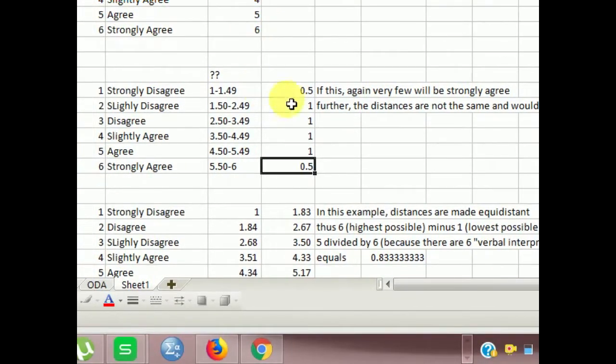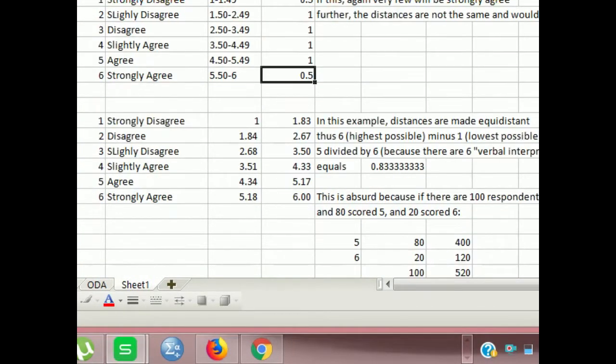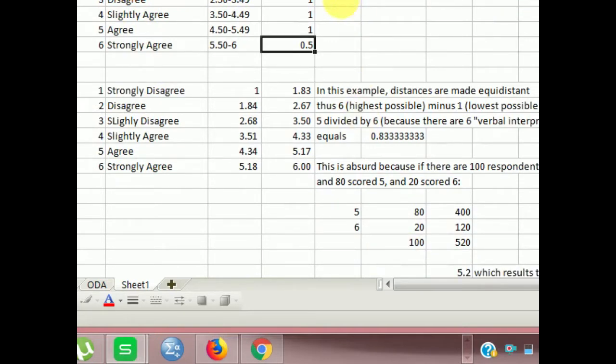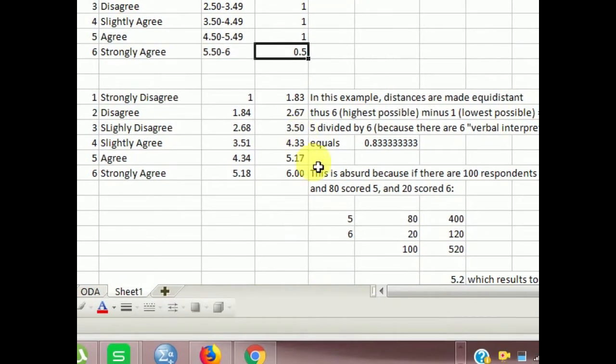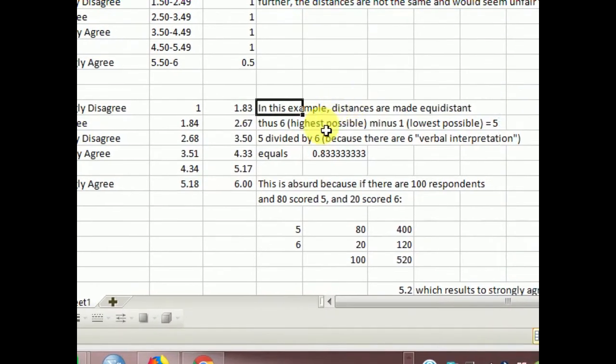Now, if you use the equality, equidistant scale, which is I saw this in the paper of the marketing people, what they do is the distances are made equidistant. So the highest possible score minus the lowest possible score, so 6 minus 1 is 5, and then 5 divided by 6, because there are 6 in verbal interpretation, then that will equate to .833. So what they do is just to add .83 to the previous scale. So 1 plus .83 is 1.83. If you add .83 again, then that's 2.67, and so on, and so on, and so on, until you get to 6. So equal. You solve the equality issue, the equidistant issue.